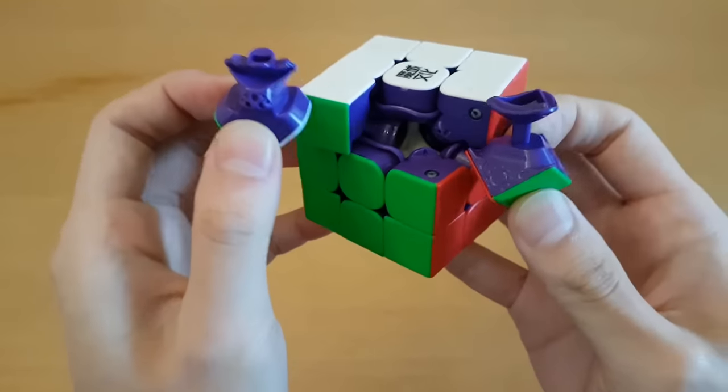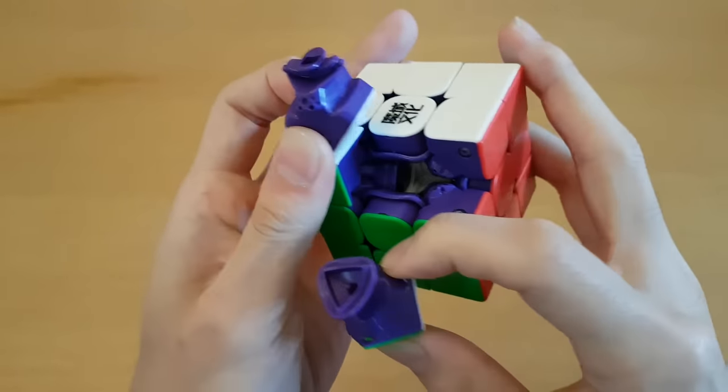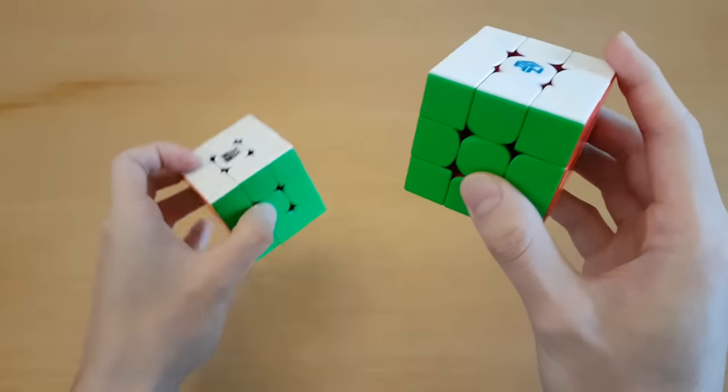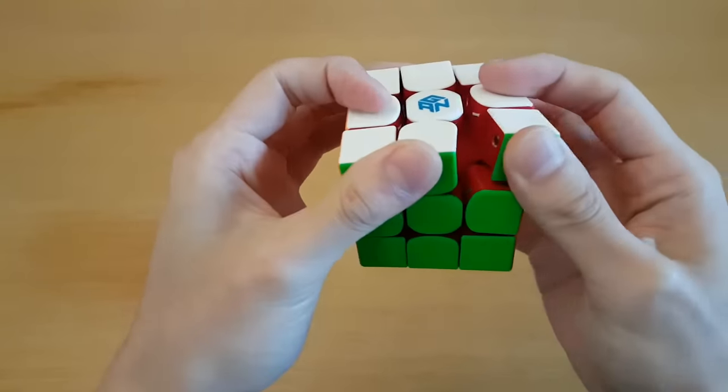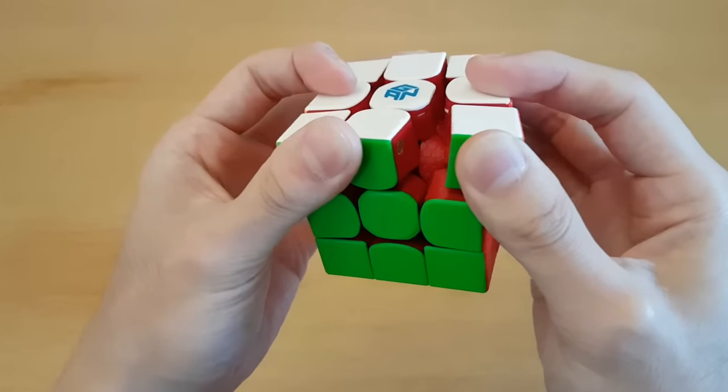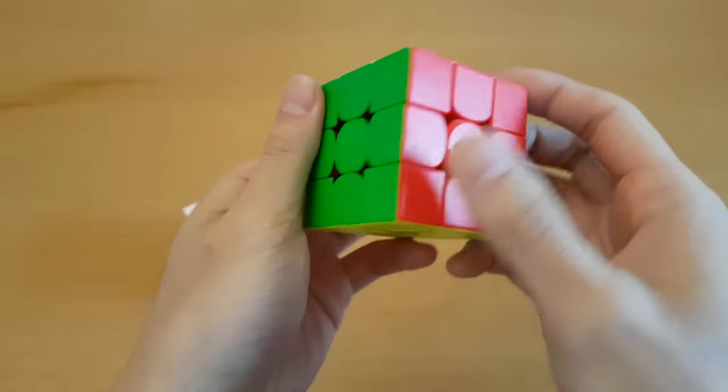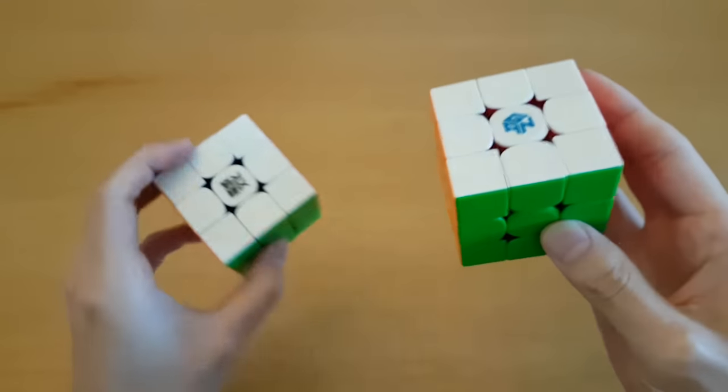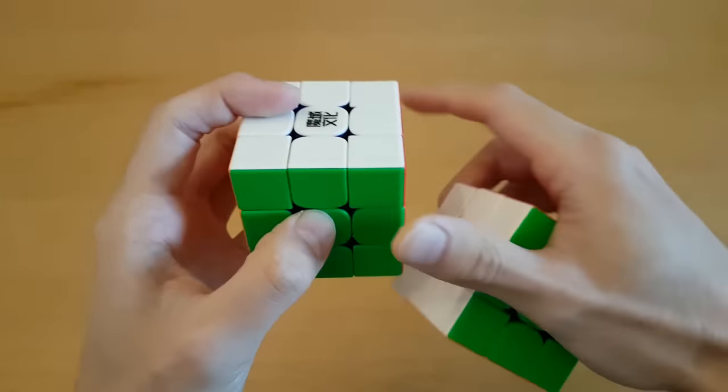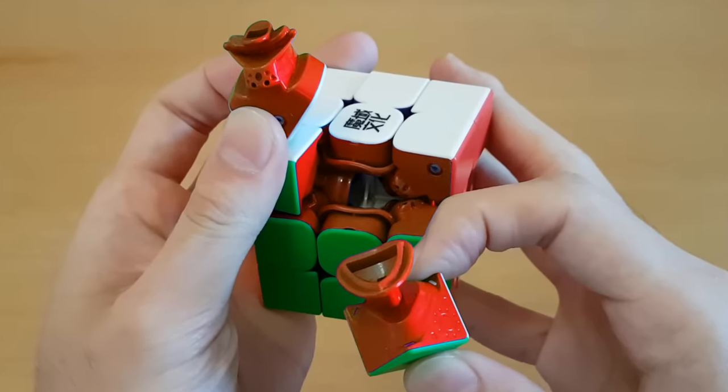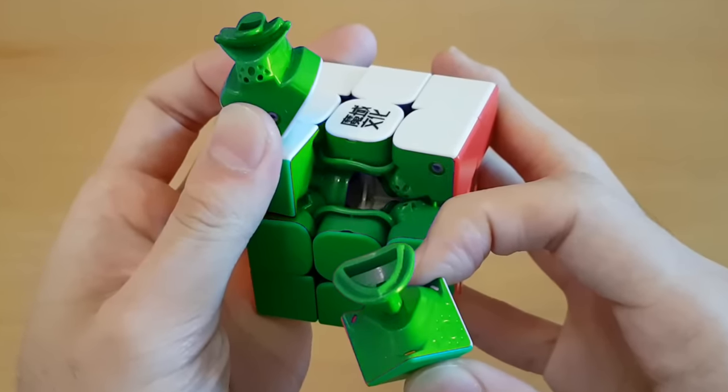This looks amazing. I love when cubes have different colored internals. My favorite one is still the Chinese New Year Gan cube with the red internals, and that's just because red looks amazing. But also because it just looks different from the outside, and this one just looks like black until you actually open it up. Let me know in the comments which color you guys think would make the coolest internals.